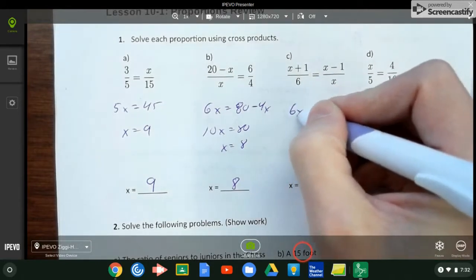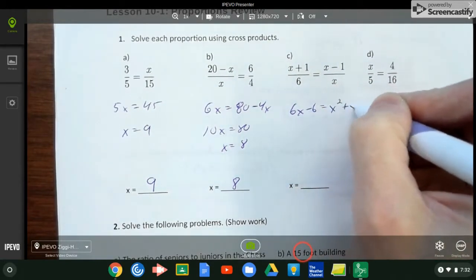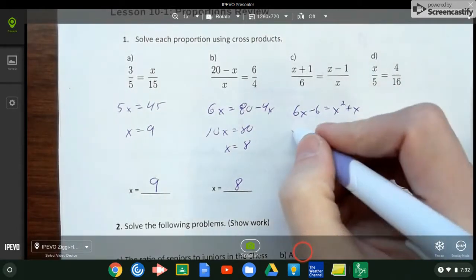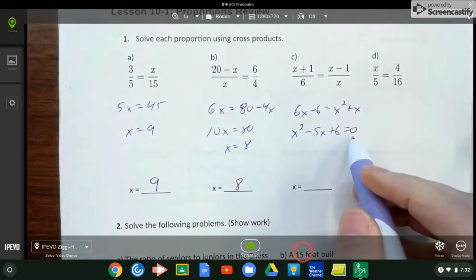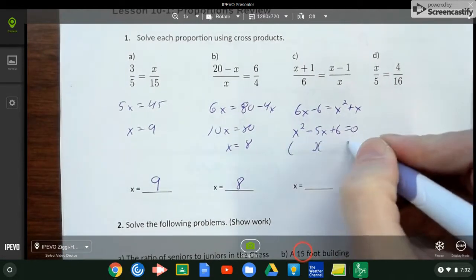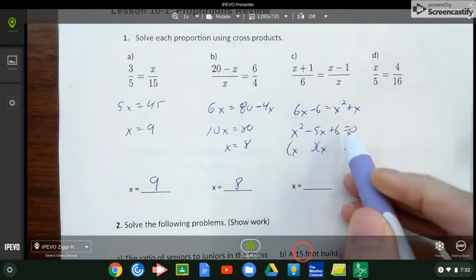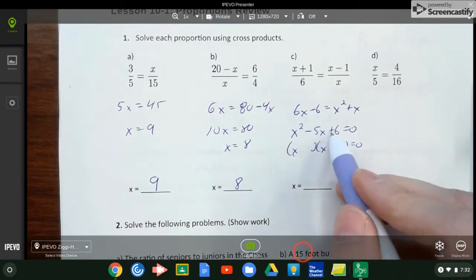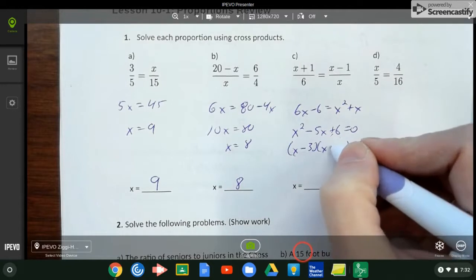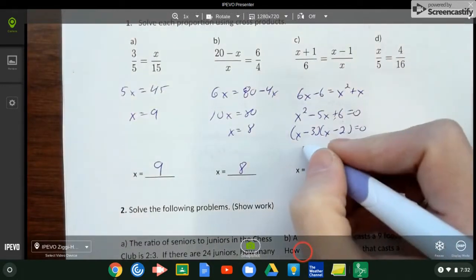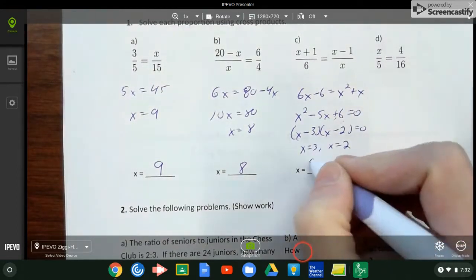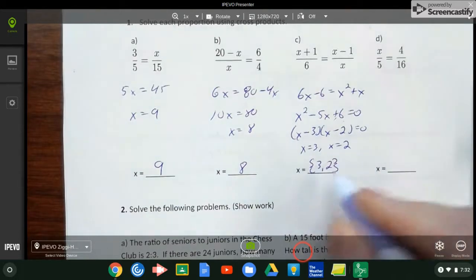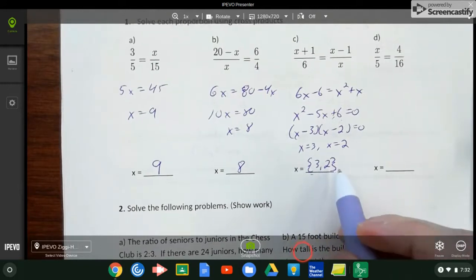Over here: 6x minus 6 equals x squared plus x. I see an x squared, I got to do some factoring. So x squared minus 5x plus 6 equals 0. Don't lose your equal zero. Be careful in factoring this one - there's two different ways to factor a 6. I could use 6 and 1 or I could use 2 and 3, but since I want them both to be the same, I'm going to use 2 and 3. So we actually have two solutions here: x is 3 or x is 2. So my solution is 3 and 2.